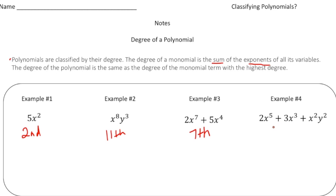And then here we have a trinomial. So we have 2x to the fifth, 3x cubed, and then x squared y squared. So the first term, the 2x to the fifth, this would be to the fifth degree. This one here would be to the third degree.